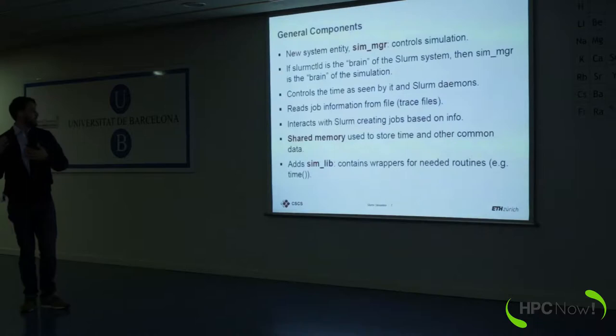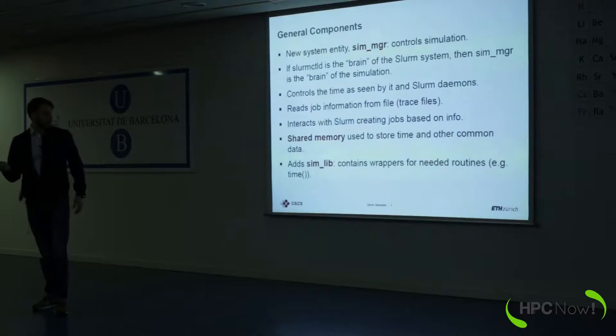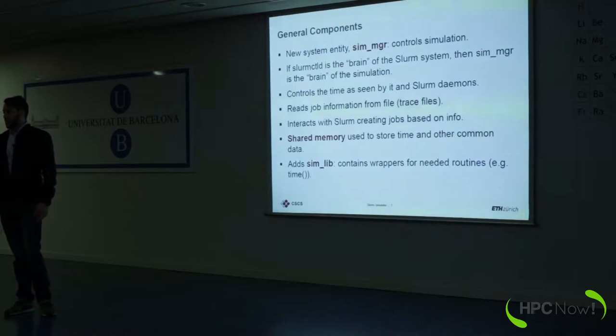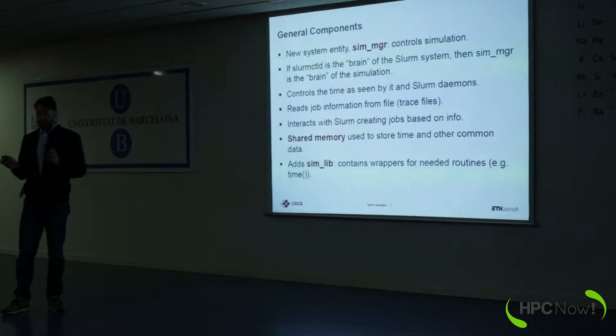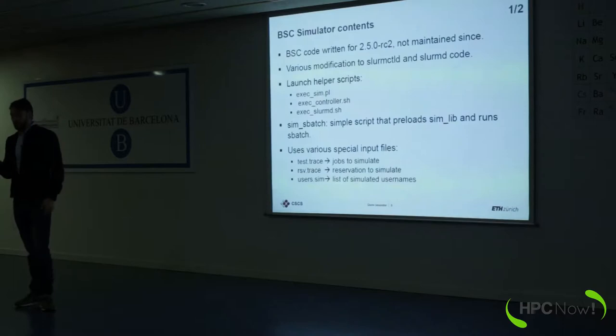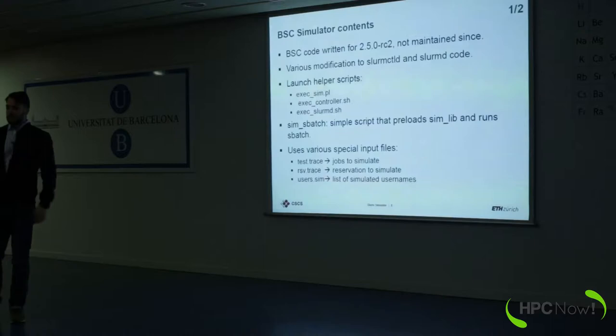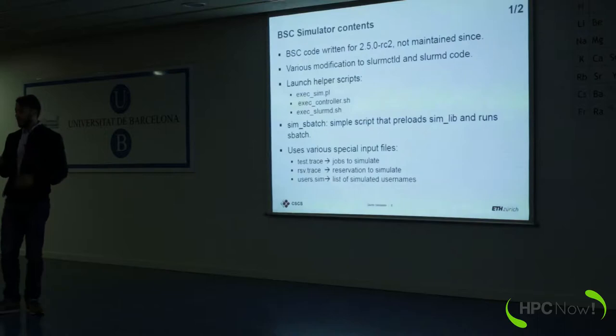The BSC code also contains the sim libraries, sim.lib. There are wrappers for common procedures like time sleeps and pthread create, and similar things, because this piece of software uses a lot of the pthread libraries, the C-pthreads. The problem was that the BSC code was written for another version of Slurm — at the time it was 2.5 — and it was never maintained since. It's still available on the BSC site. It contains various modifications to the Slurm control daemon and Slurm daemon code.